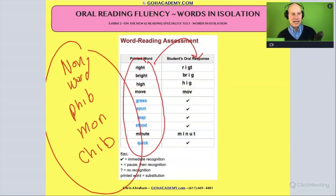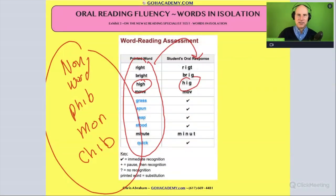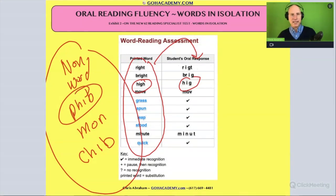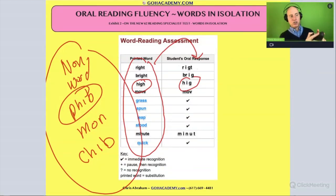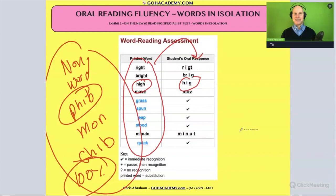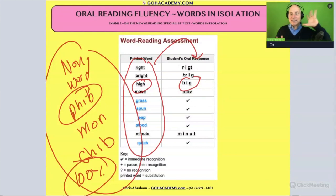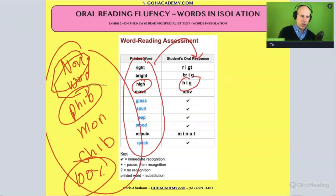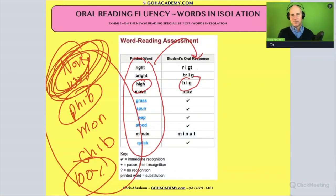If they're reading a real word like 'high' and say 'hig,' there's a chance they could self-correct because 'hig' doesn't make sense. But with non-words like 'fib,' there's no clue — 'fib' doesn't mean anything, so it could have really been anything. That's why, if a student reads nonsense words in isolation, it's a 100% pure phonics assessment, because there is absolutely no way they can test if it sounds correct or not.